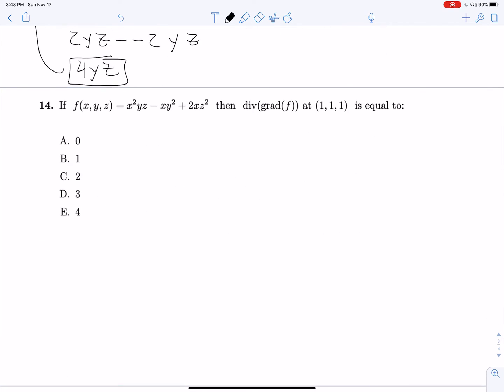Okay. We're looking for the divergence of the gradient of f at 1, 1, 1. So, taking the gradient of f, we are going to, this guy is going to become 2xyz. Or sorry. No, this is gradient. This is gradient, not divergence yet. So, taking the gradient of f, fx is going to be 2xyz minus y squared plus 2z squared.